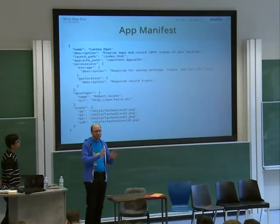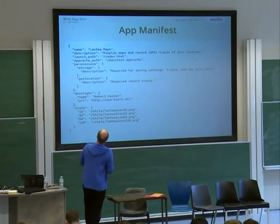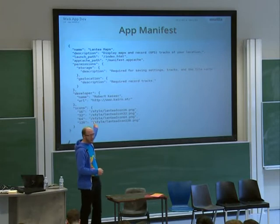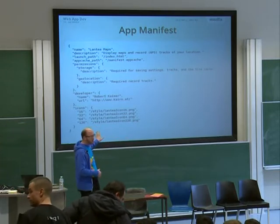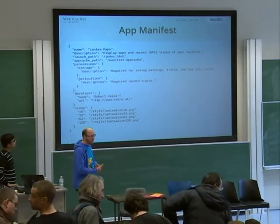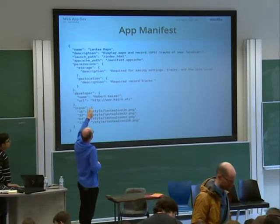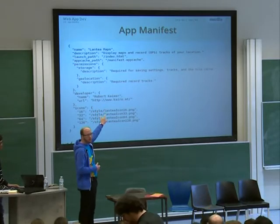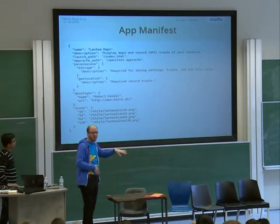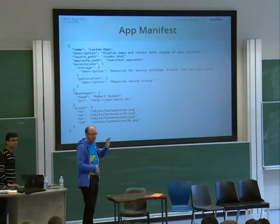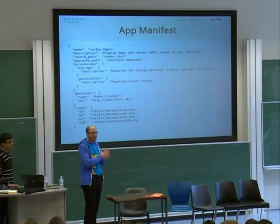So let's look at the main difference between a website and a web app — that's the app manifest. On this projector, the whole manifest fits on the screen. That's the manifest from my Lantia Maps application — this is exactly the manifest, I did not strip anything out. It's just a JSON file that describes what this app is and what it can do. It has a name, a description, and the HTML file that is called when the app is launched — just index.html here. The app cache path is for offline capabilities of hosted apps — that's HTML5 app cache.